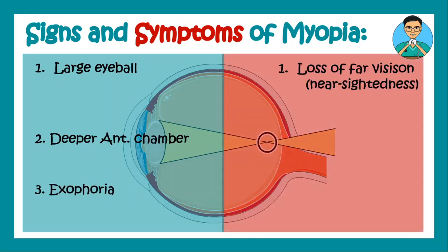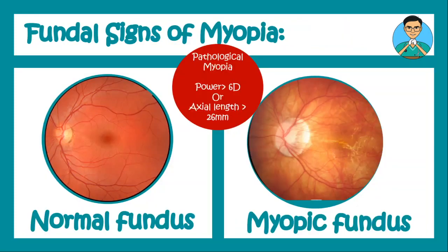The signs of myopia include large eyeball, deeper anterior chamber, and exophoria. Symptoms include loss of far vision — that is why it is known as nearsightedness — and floaters, which occur due to vitreous liquefaction.